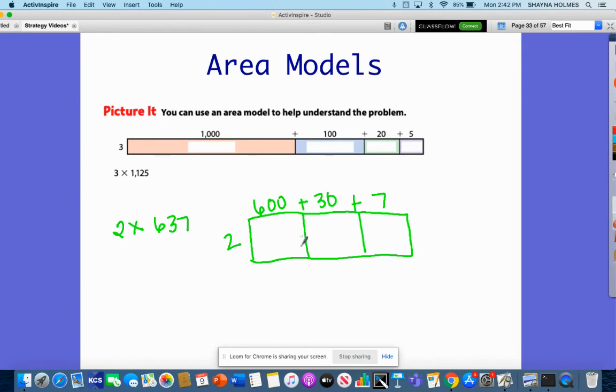Now I'm going to multiply inside of these boxes through that same process. Two times 600 gives me 1,200, because 600 plus 600 is 1,200. Two times 30 would be 60, and 2 times 7 is 14. Then I'm going to add these together out here to the side. My answer would be 1,274.